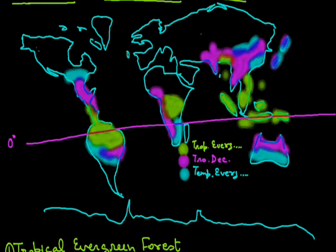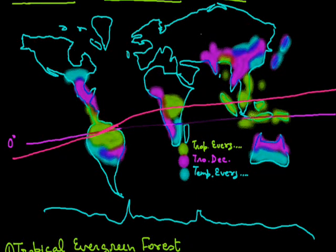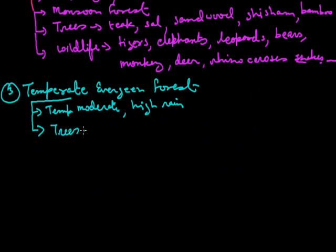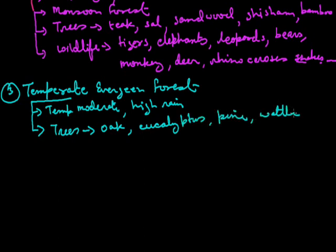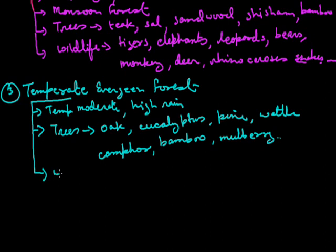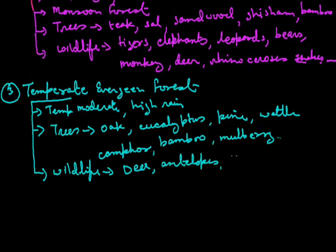The Tropic of Cancer goes from here like this. The main trees which are found here are oak, eucalyptus, pine, wattle, camphor, bamboo, and mulberry. The highlands have coniferous trees like pine and spruces. The wildlife in these regions includes deer, antelope, monkeys, bears, wolves, foxes, etc.